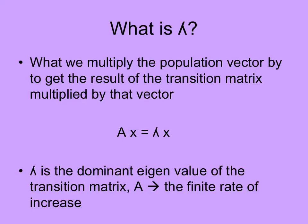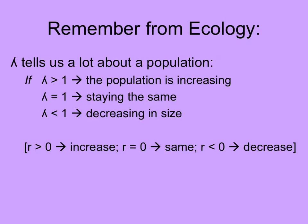Lambda, the dominant eigenvalue of the transition matrix A, is simply the finite rate of increase. A times the vector x is equal to lambda times x. Lambda can tell us a lot about a population: if it equals 1, the population stays the same; if it's greater than 1, the population increases; and if it's less than 1, the population is decreasing in size.